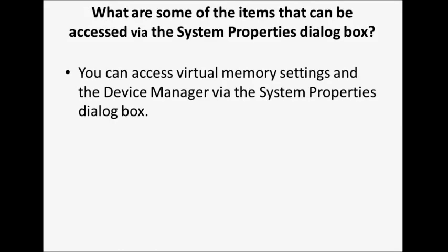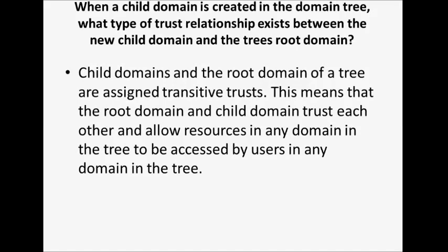What are some of the items that can be accessed via the System Properties dialog box? You can access Virtual Memory Settings and the Device Manager via the System Properties dialog box. When a child domain is created in the domain tree, what type of trust relationship exists between the new child domain and the tree's root domain? Child domains and the root domain of a tree are assigned transitive trusts, meaning the root domain and child domain trust each other and allow resources in any domain in the tree to be accessed by users in any domain in the tree.